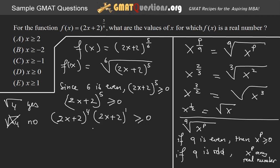So this is going to lead to (2x+2) greater than or equal to 0. So 2x is greater than or equal to negative 2. So x is greater than or equal to negative 1. And this is the answer. So the correct answer, as you can see here, is C.